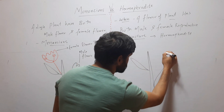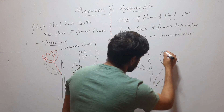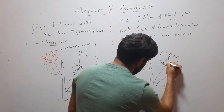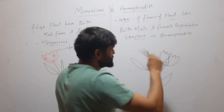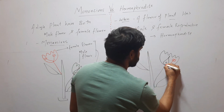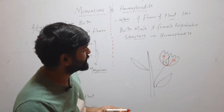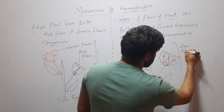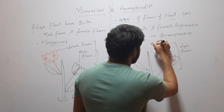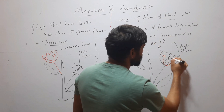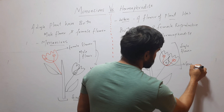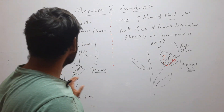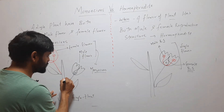Suppose this is a plant, and this plant has this flower, and this flower has these reproductive structures. Here you can see that this single flower has male reproductive structures and also has female reproductive structures — so this condition is called hermaphrodite.